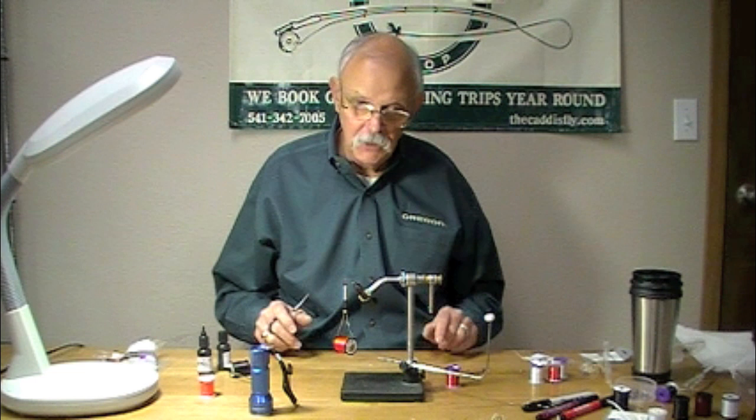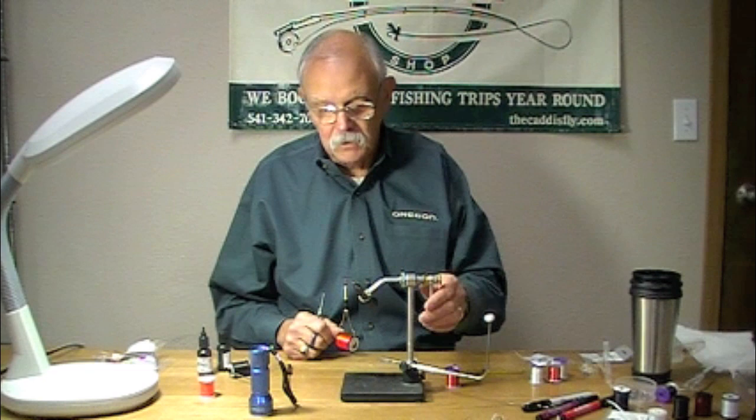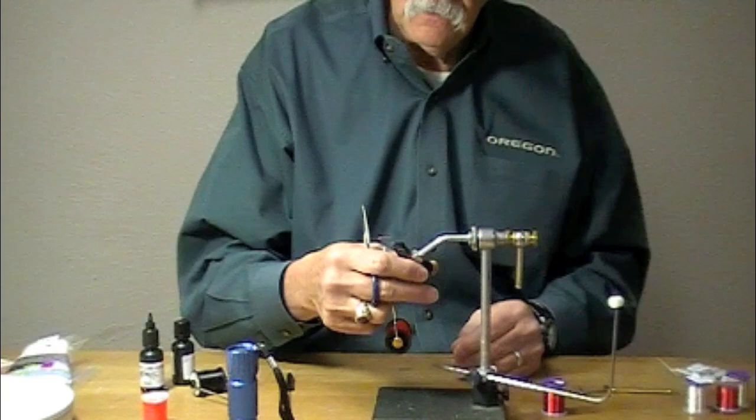Hi, this is Jim Turborg with Chris Daughters at the Caddisfly, continuing our series of Clear Cure Goo Chironomid Patterns. Today I'm going to tie a blood worm, the larva pattern, and I have a size 10 straight-eye hook here.